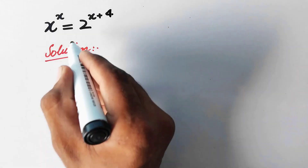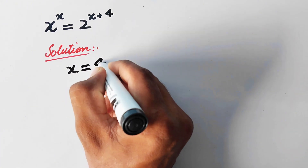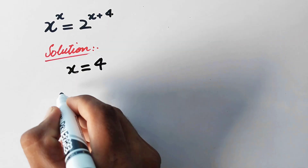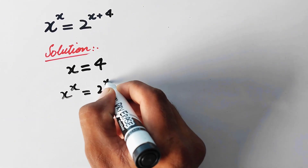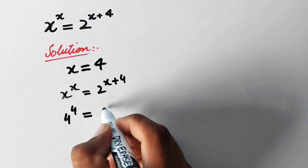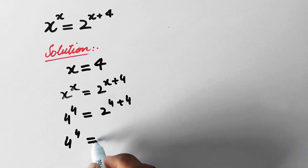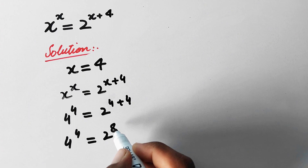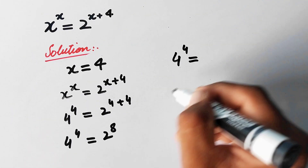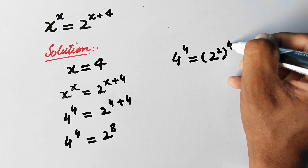Now we are going to verify the value x equals 4 by substituting it into our original equation: x raised to power x is equal to 2 raised to power x plus 4. So we get 4 power 4 is equal to 2 power 4 plus 4, which means 4 power 4 is equal to 2 power 8.